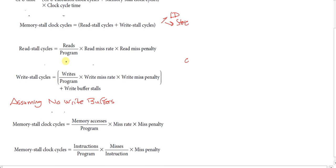The write stall clock cycles is a bit different. It's actually the writes per program, times the write miss rate, times the write miss penalty, plus another factor: the write buffer stalls. In the write process, sometimes we need a buffer in order to write to memory, and when the buffer is full we should stall.